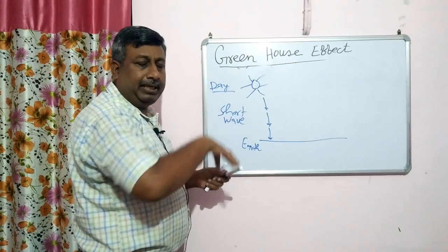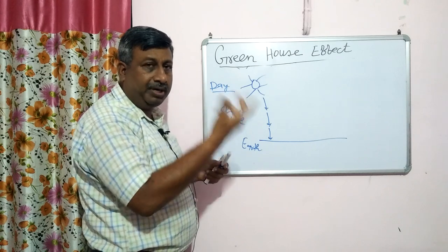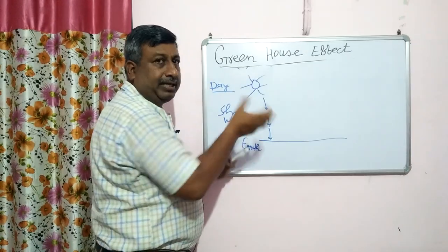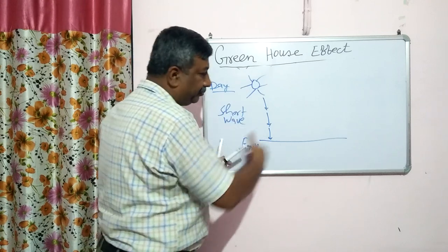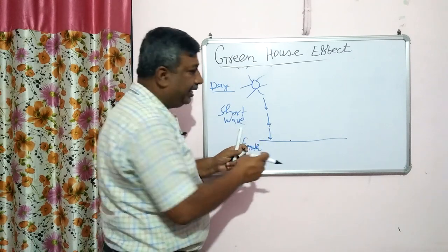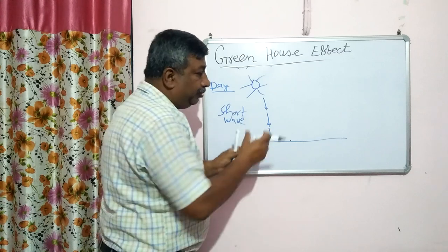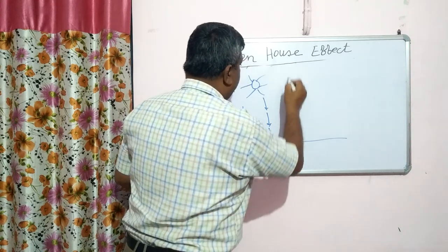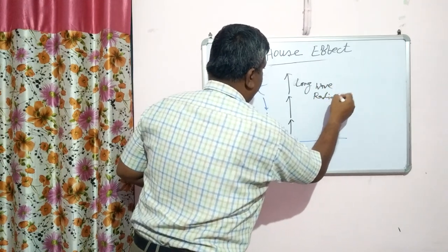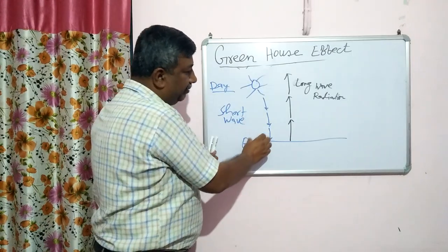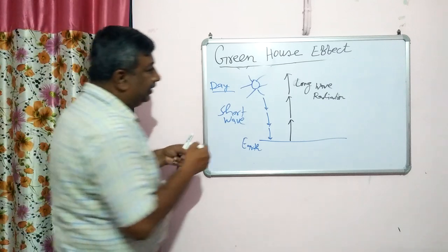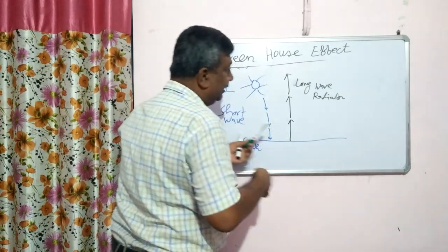Solar radiation coming from the sun is maximum in the short wave range — visible light, which is why we can see it — and also in the ultraviolet range. What happens to the earth? Temperature increases. Solar radiation falls on the land. Then at sunset, when night begins, the earth starts cooling and radiates heat as long wave radiation. The earth's temperature rises during the day — 20, 30, 35, 40 degrees — higher in summer, slightly lower in winter. But temperature does increase when the sun rises. The earth then re-radiates this heat as long wave radiation.